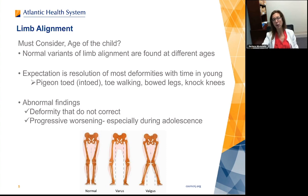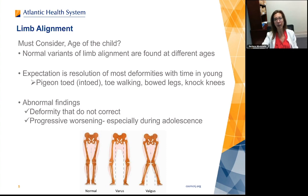Toe-walkers — although some kids do some toe-walking when they start walking, and some only toe-walk when out of shoes — if they're toe-walking all the time and it doesn't go away, don't wait too long to get the orthopedist involved. It can be a very hard habit to break. Abnormal findings are deformities that don't correct over time. They can be progressive, worsening especially during adolescence. Here's a nice picture of normal alignment, varus, and valgus alignment.